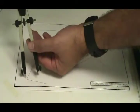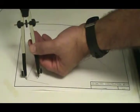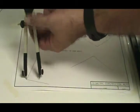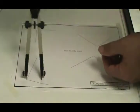You take your compass and set it on the vertex of the given angle. And open it any distance, and draw an arc so that it intersects both sides of the angle.